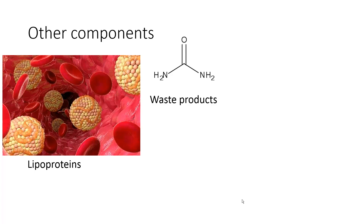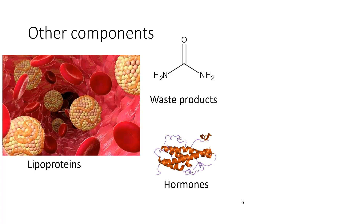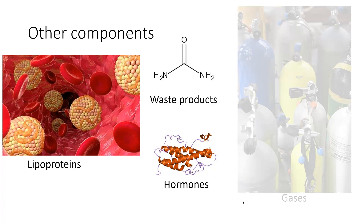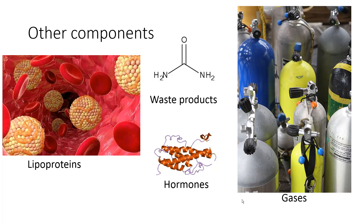We talked about sex hormone binding globulin carrying things like testosterone and estrogen through the bloodstream, but there are also numerous hydrophilic hormones that can just be dissolved in the plasma, like growth hormone. So you'll have hormones dissolved in there — they don't constitute a very large proportion individually, but collectively they are an important component. Finally, you'll have blood gases. Most of your oxygen and carbon dioxide are bound to a protein inside your red blood cells, but because you're breathing air that contains nitrogen, oxygen, and carbon dioxide, those gases also dissolve into the aqueous environment of your plasma.